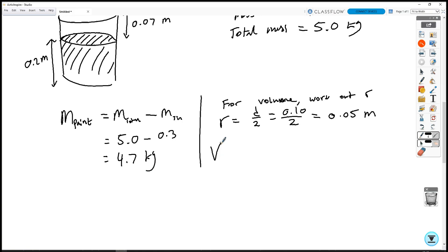And then for the volume, we just use pi R squared H, which is pi times 0.05 squared times by the height, which is 0.2. Can someone work that out, please?